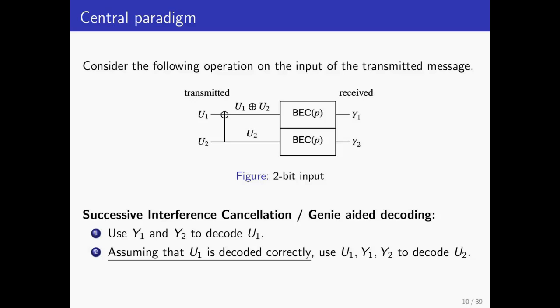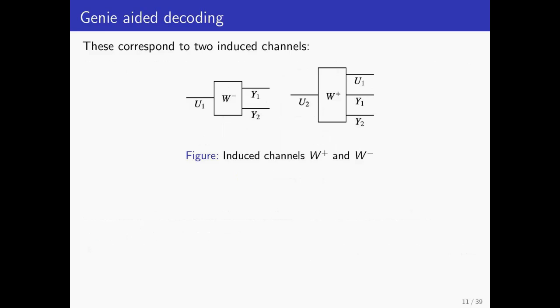As a first step to analyzing this procedure, let's consider a genie-aided setting, where in the second round, a genie tells us the true value of U1 that was originally transmitted. Let's try to see what the error rates for the estimates of U1 and U2 look like in this procedure. We can think about this process of sequential decoding as two induced channels, W minus and W plus. As you can see in the figure, Y1 and Y2 are used to decode U1 in W minus, and Y1, Y2 and U1 are used to decode U2 in W plus.